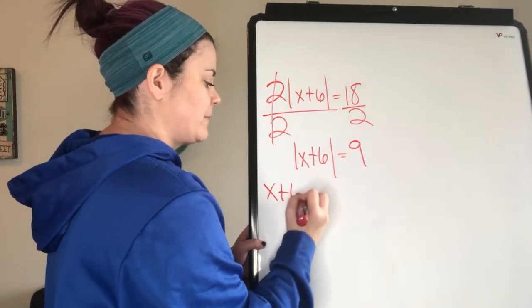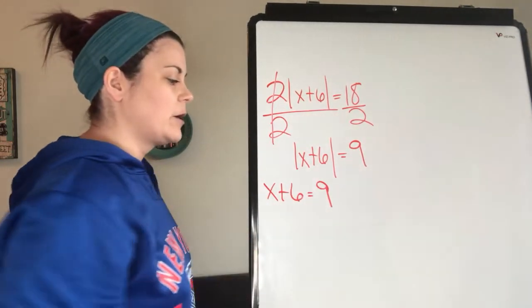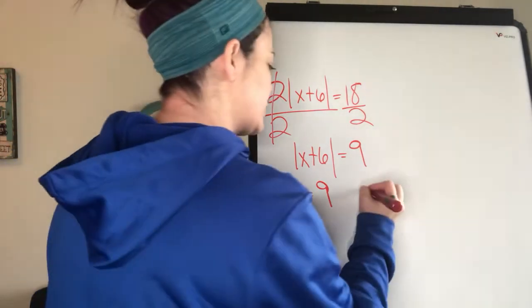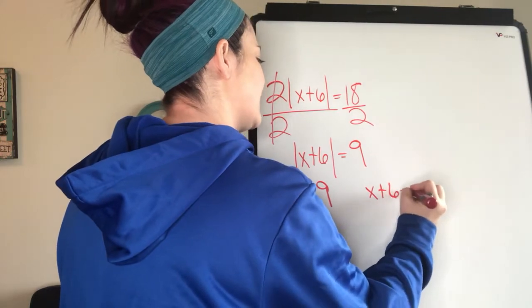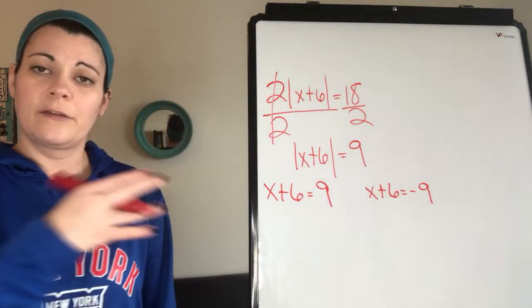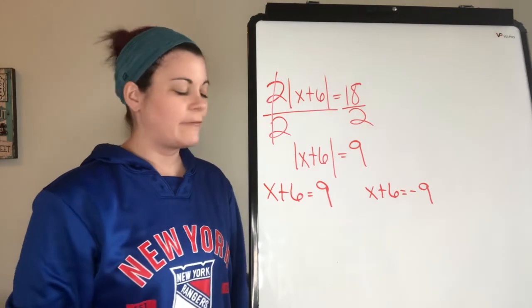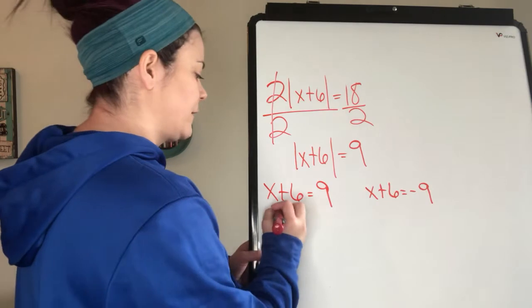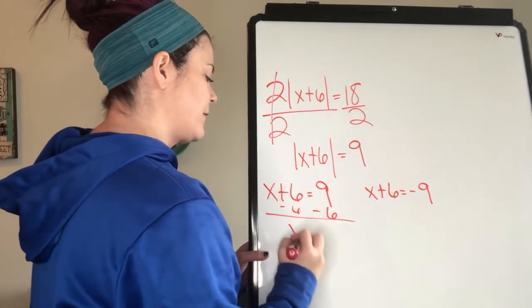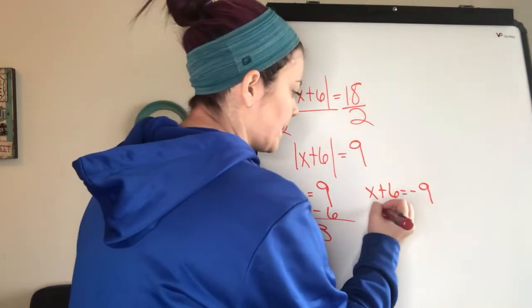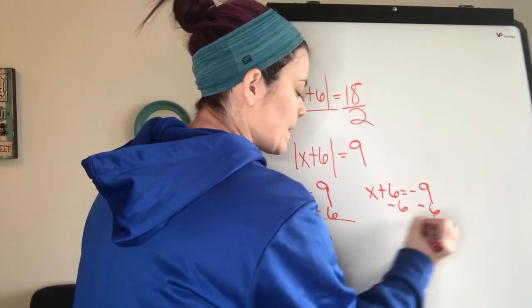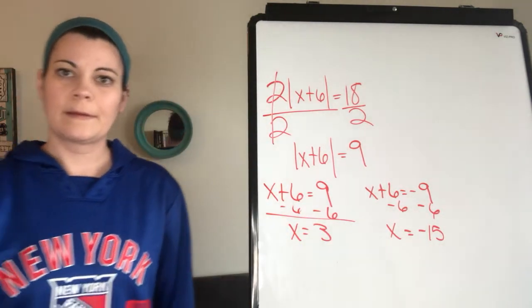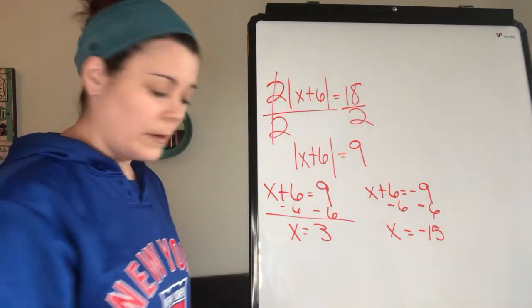We do the same thing as before and split into two equations. First equation: drop the absolute value bars and write as is — x + 6 = 9. Second equation: drop the absolute value bars and take the opposite of the other side — x + 6 = negative 9. Solving both: x = 3 and x = negative 15. That is how you solve absolute value.